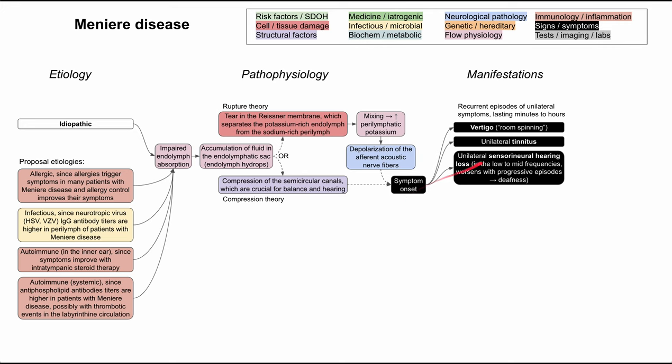The patient will also have unilateral tinnitus — hearing a sound such as ringing, a tone, a beep, or another periodic sound in the ear in the absence of an actual external sound — and this will be on one side. The patient will also have unilateral sensorineural hearing loss, typically in the low to mid frequencies. This hearing loss can worsen with progressive episodes and in some cases can lead to deafness.